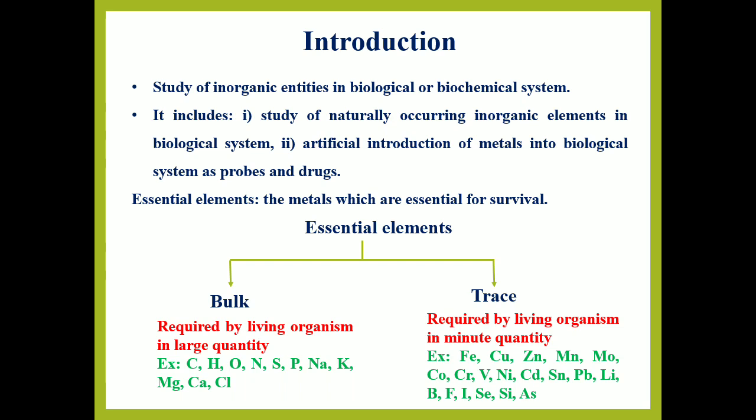There are 12 transition metals which come under trace elements. Some other elements like lithium, boron, silicon, and arsenic also come under trace elements. In addition, there is one more category: toxic elements like cadmium, mercury, and lead, which all create poisoning of our body and are not good for our health.